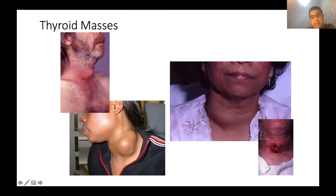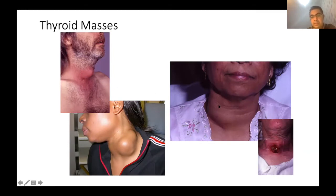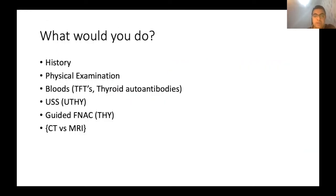This is a collection of thyroid lumps showing different presentations — including a lateral thyroid mass coming from the left lobe. These images illustrate the commonest ways thyroid masses tend to present.